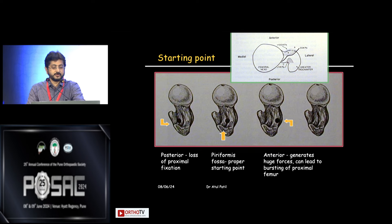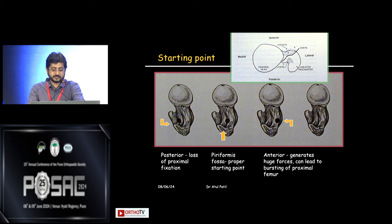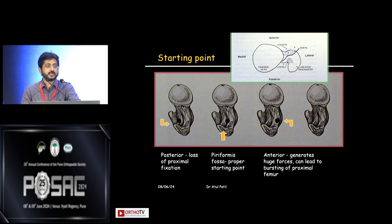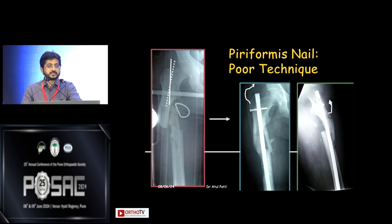The entry point is very important. For subtrochanteric fractures, it should always be medial to the tip of the greater trochanter — not anterior, not posterior. Going posterior leads to loss of proximal fixation; going too anterior causes hoop stresses that can burst the proximal femur. You should be in the center and medial to the tip of the trochanter. Not following the piriform fossa entry point leads to varus angulation — a classic consequence of a wrong entry point.